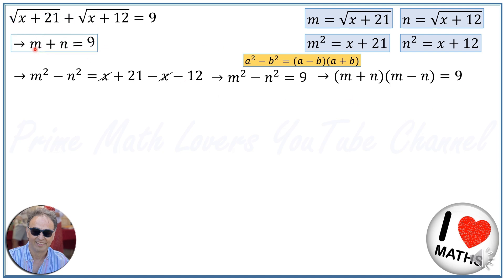But we know from the equation that m plus n equals 9. So if I replace this with 9, I'll have 9 times m minus n equals 9, and then m minus n equals 1.